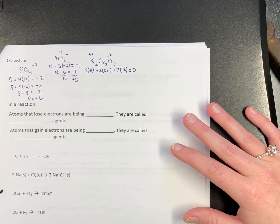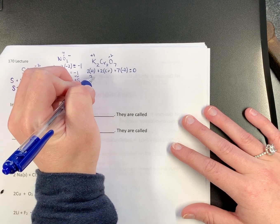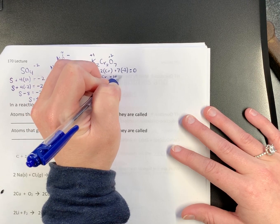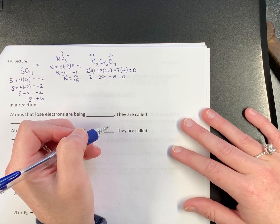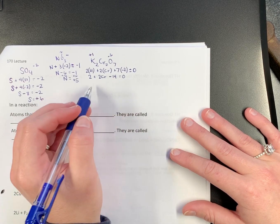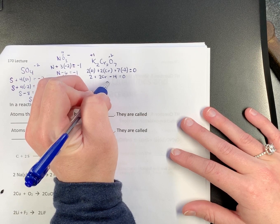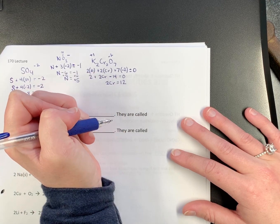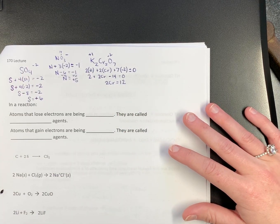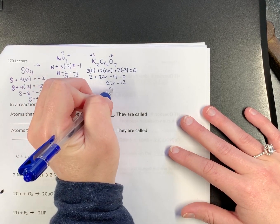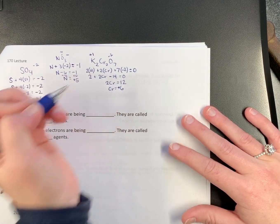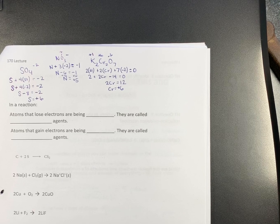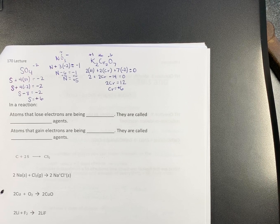You can do this. It's just weird. So we know that 2 plus 2 times chromium minus 14 equals 0. So I'm going to bring things over to one side. So I'm going to get 2 chromiums equals how much? 12. So that means chromium is positive 6.